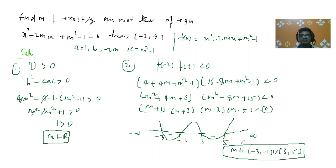So this equation will have exactly one root lies between -2 to 4 when m lies from -3 to -1 or 3 to 5. So that's all in this video. The rest will discuss in the next video. Thank you.